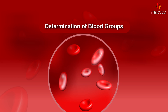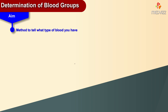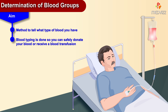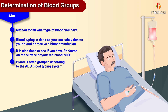In this segment of biochemistry, we are going to be discussing the procedures involved in identifying blood types. The aim is to identify the type of blood that a person has. Blood typing is done so that you can safely donate your blood or receive a blood transfusion. It is also done to see if you have Rh factor on the surface of the red blood cells. Blood is often grouped according to Landsteiner's ABO blood grouping system.